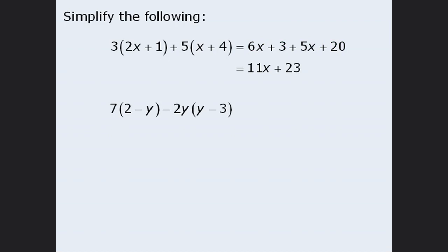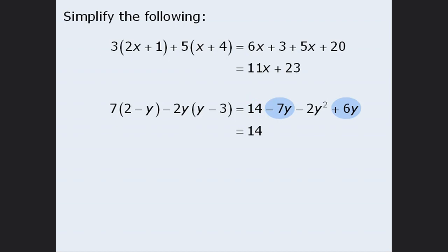Next example. We'll begin by expanding: multiply 7 by 2 to get 14, and multiply 7 by negative y to get minus 7y. Then multiply negative 2y by y to get minus 2y squared, and multiply negative 2y by negative 3 to get plus 6y. From here, we can simplify. Since there are no other constant terms to combine with 14, we leave that as is. Next, negative 7y plus 6y equals negative 1y, or minus y. And we have no other terms to combine with negative 2y squared, so we leave that as is. We can rearrange to get negative 2y squared minus y plus 14.